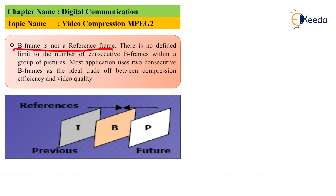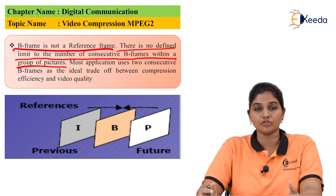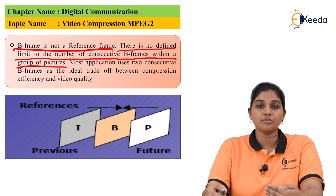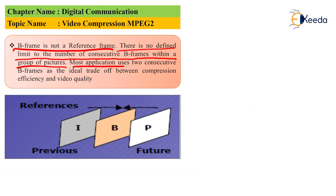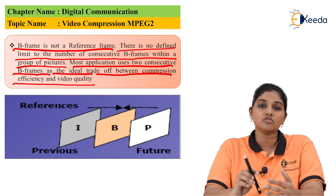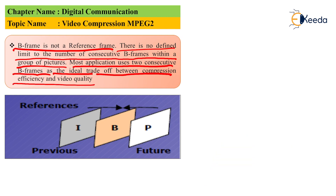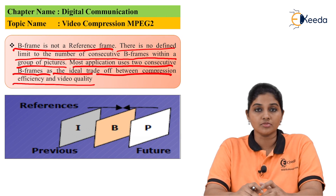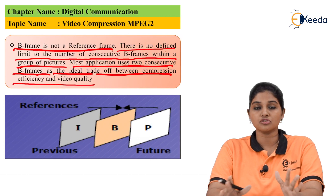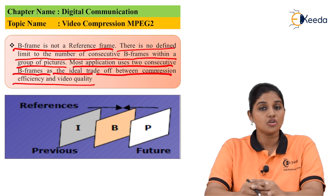B-frame is not considered a reference frame, as it is formed by using two other frames. There is no defined limit on the number of consecutive B-frames within a Group of Pictures — any number of B-frames can be created. However, most applications use two consecutive B-frames as the ideal trade-off between compression efficiency and video quality.